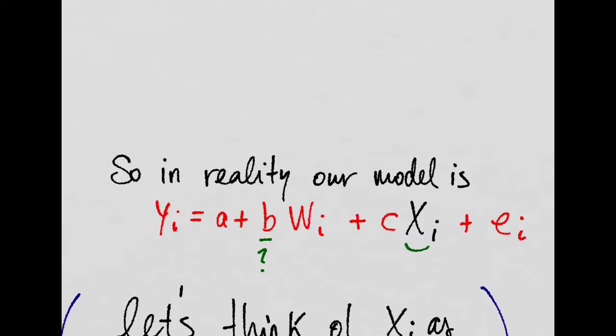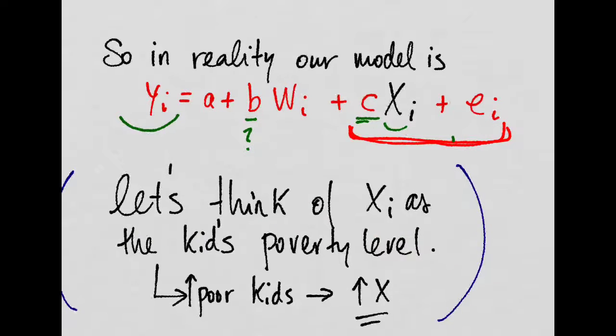So in reality, our model would look something closer to this. In which we have separated some unobservable from the error that we had before. And we call C to the effect of those unobservables in the outcome.